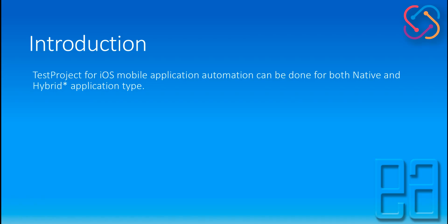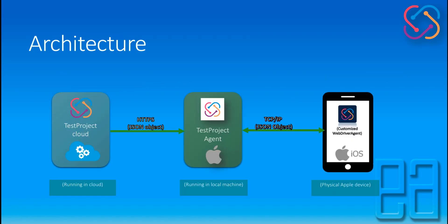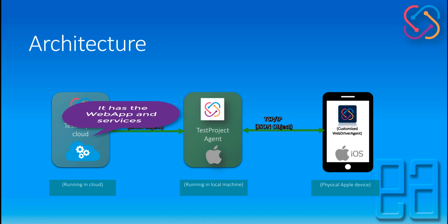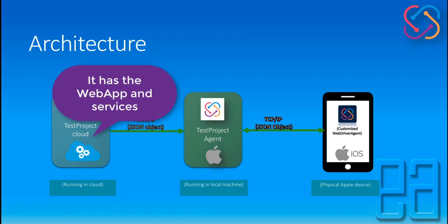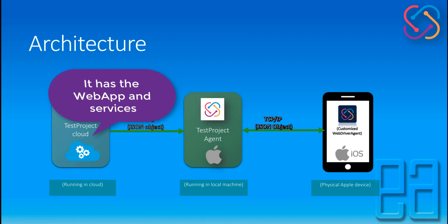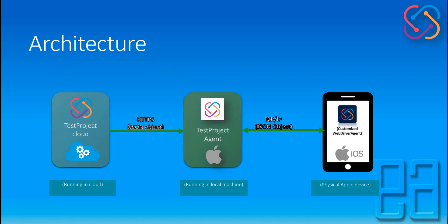Before actually configuring a physical device with test project, I'm going to show you how the architecture of test project looks like while it's executing a test on your physical device. The test project will have a test project cloud that we access from the web browser, and the cloud has all the web apps and servers to communicate with the test project agent, which is installed within our local machine. The local machine here can be a Windows machine or a Mac operating system.